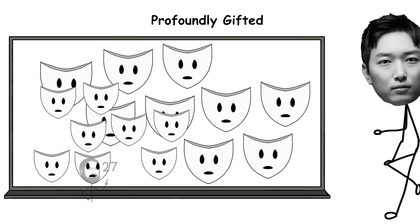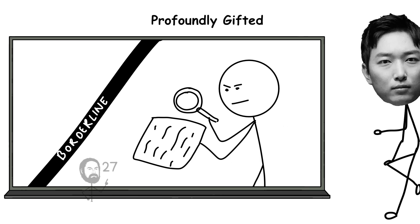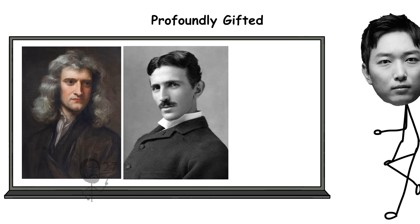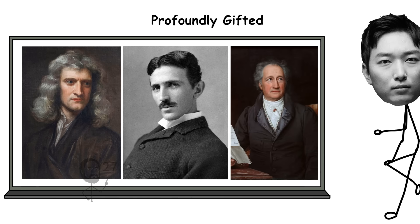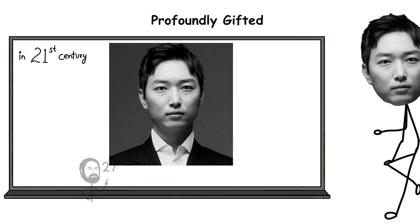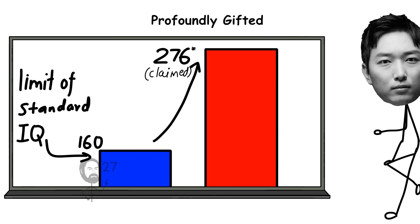Individuals in this category are exceptionally rare and frequently display an intensity of focus that borders on obsessive. Many historical figures associated with revolutionary ideas, Isaac Newton, Nikola Tesla, or Johann Von Goethe are often speculated to have operated within this range. In the modern era, one of the most widely reported claims belongs to Young Hoon Kim, a South Korean man who has claimed an IQ of 276, far beyond the measurable limits of standard intelligence tests.